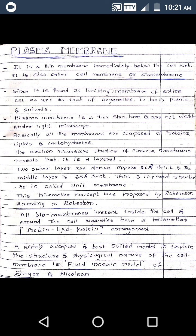Plasma membrane is composed of proteins, lipids, and carbohydrates. When observed under the electron microscope, plasma membrane reveals three layers: the outer two layers are dense and 20 angstroms thick, while the middle layer is 35 angstroms thick. This three-layer structure of the plasma membrane is called the unit membrane. Plasma membrane is thus called cell membrane, biomembrane, and also unit membrane.